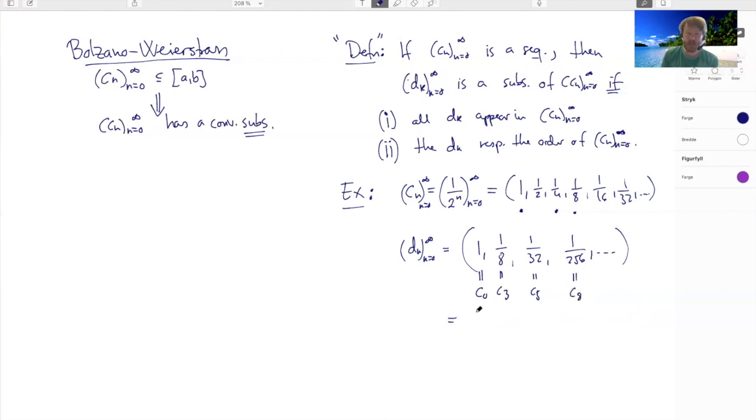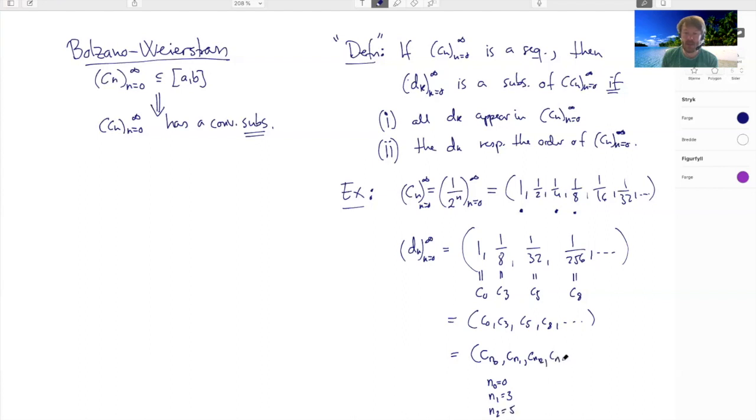Notice we can write Dk as a sequence of Cs, where I'm choosing indexes for the Cs. A clever way to express this is to say this is Cn0 where n0 is 0. Then my next guy C3 is Cn1 where n1 is 3. My next guy is Cn2 where n2 is 5. Then this guy would be Cn3 where n3 is 8, and so on.